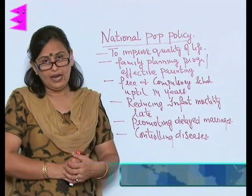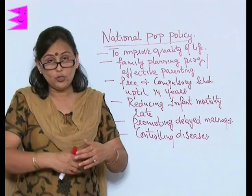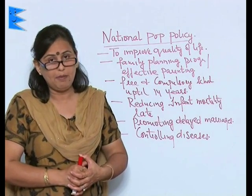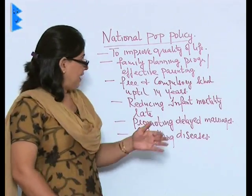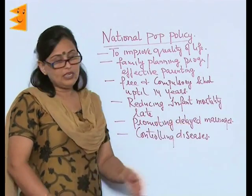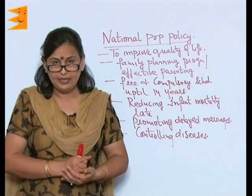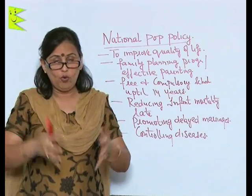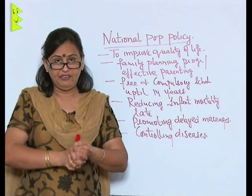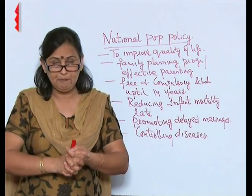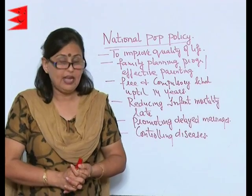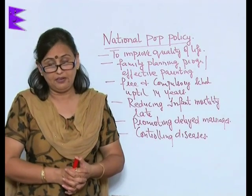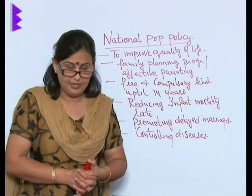Promoting delayed marriages is another objective. It should be ensured that no girl gets married below 18 years, and it should be encouraged that marriage comes at above 21. When marriages are delayed, the girl is fit, healthy — mentally and physically — and thus the population of the country also becomes healthier.